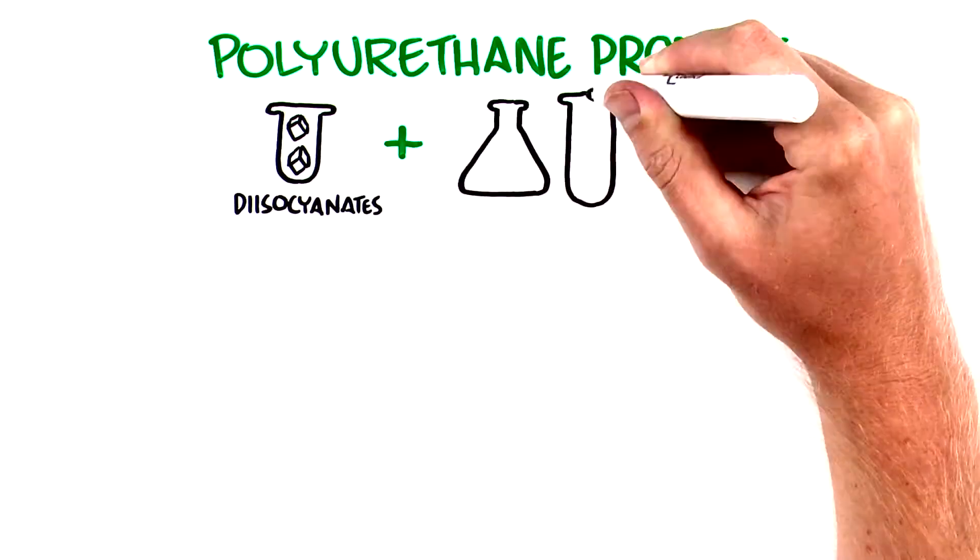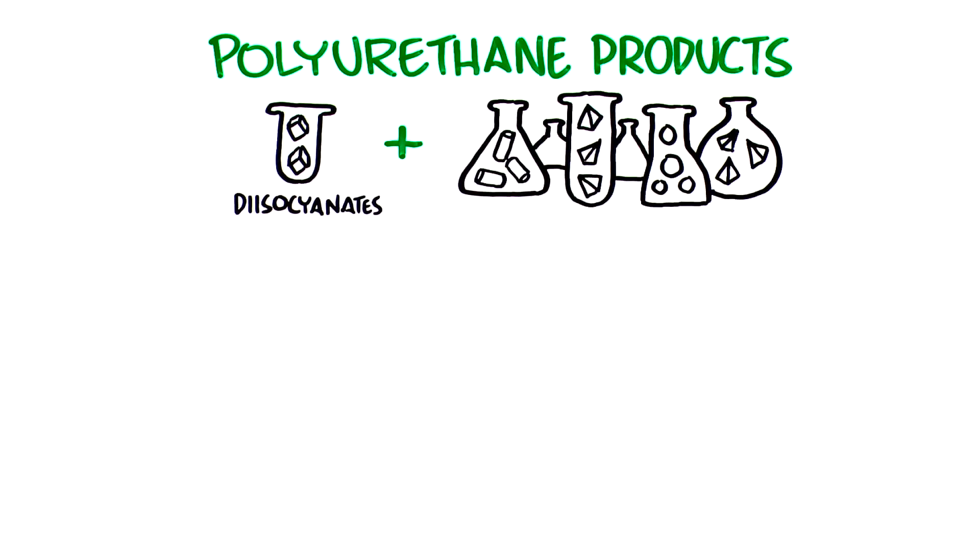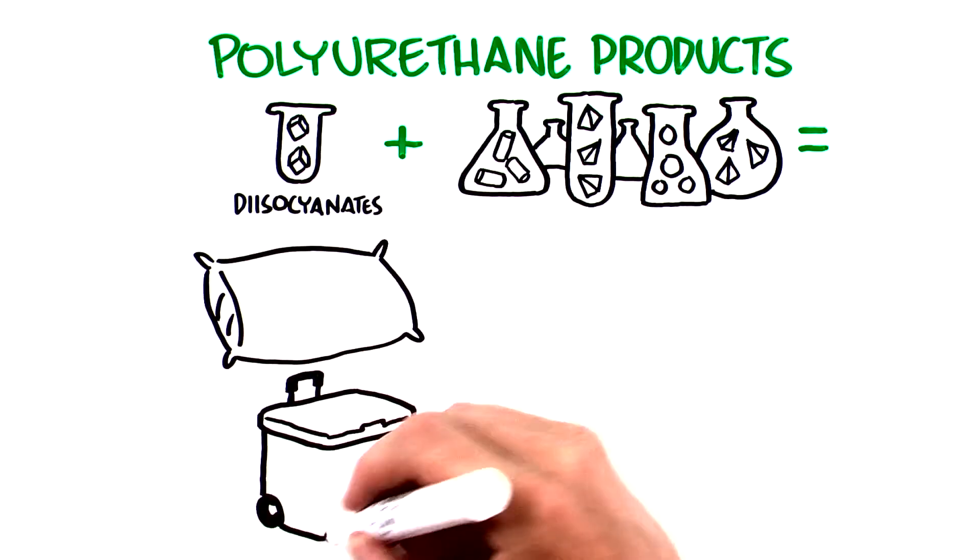To make polyurethane products, diisocyanates are mixed with a number of other chemicals. This simple process results in a wide range of useful materials including flexible foams, rigid foams,